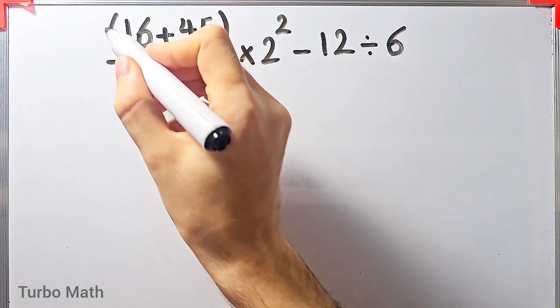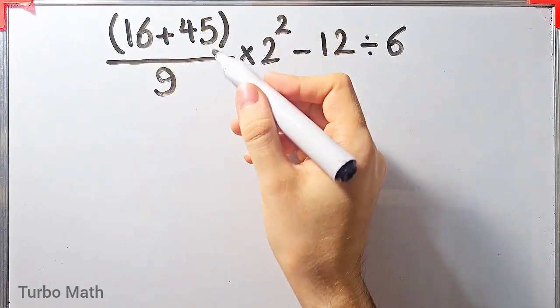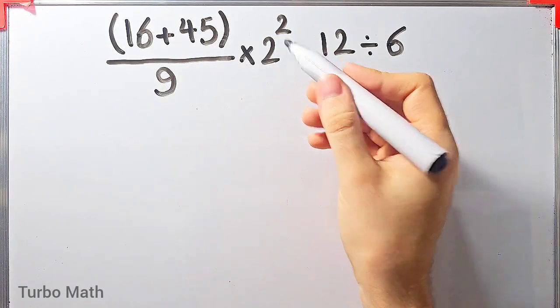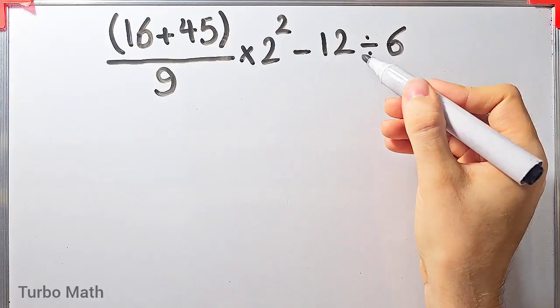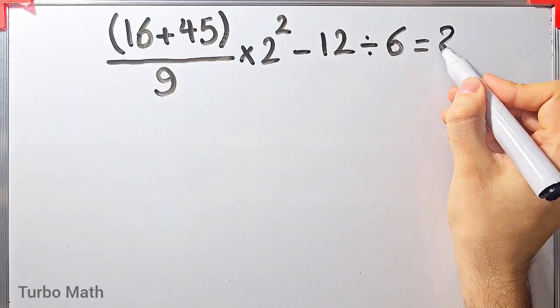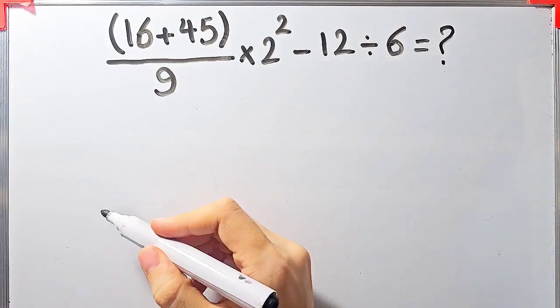Open parenthesis 16 plus 45 closed parenthesis, over 9 times 2 to the power of 2, minus 12 divided by 6. What is the answer to this question?